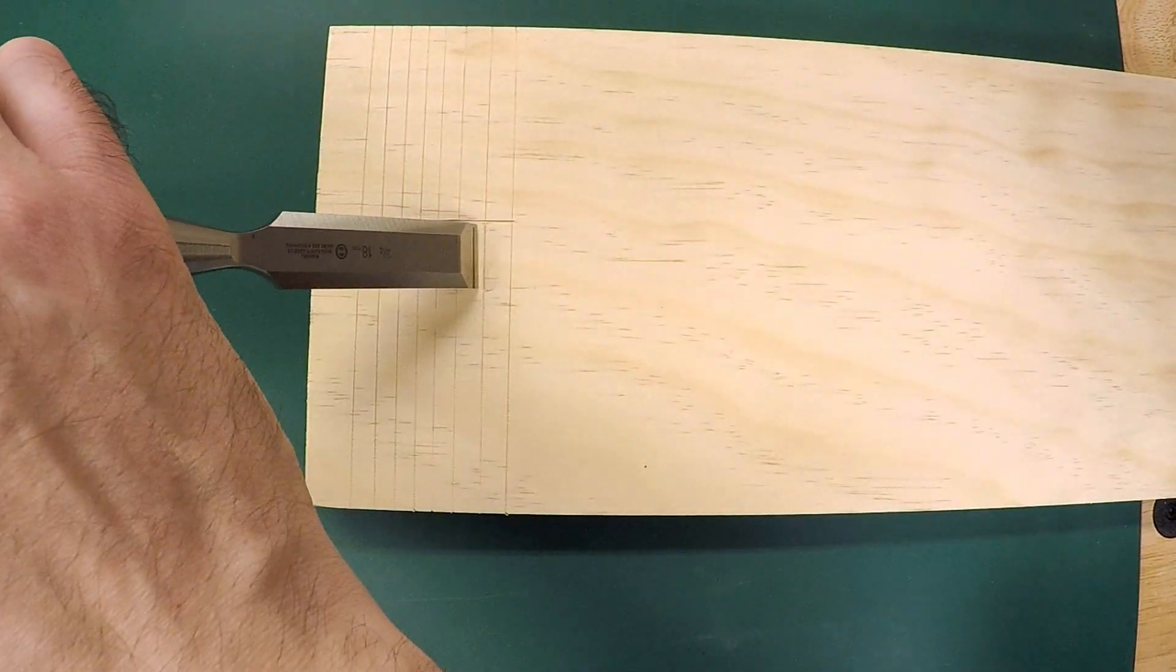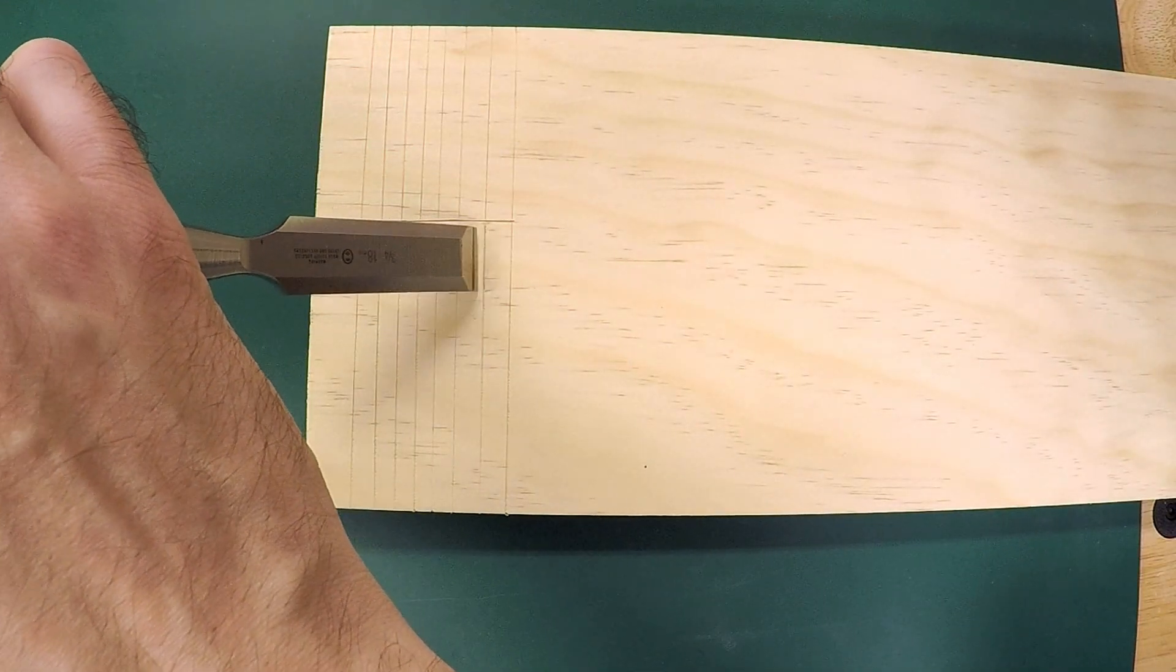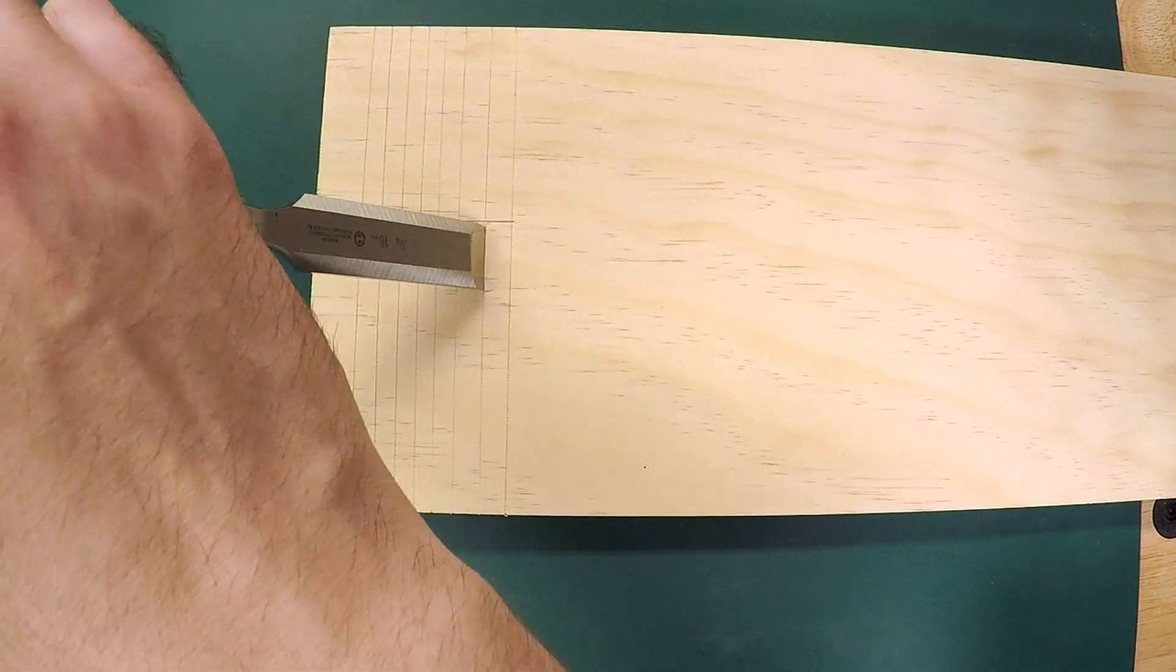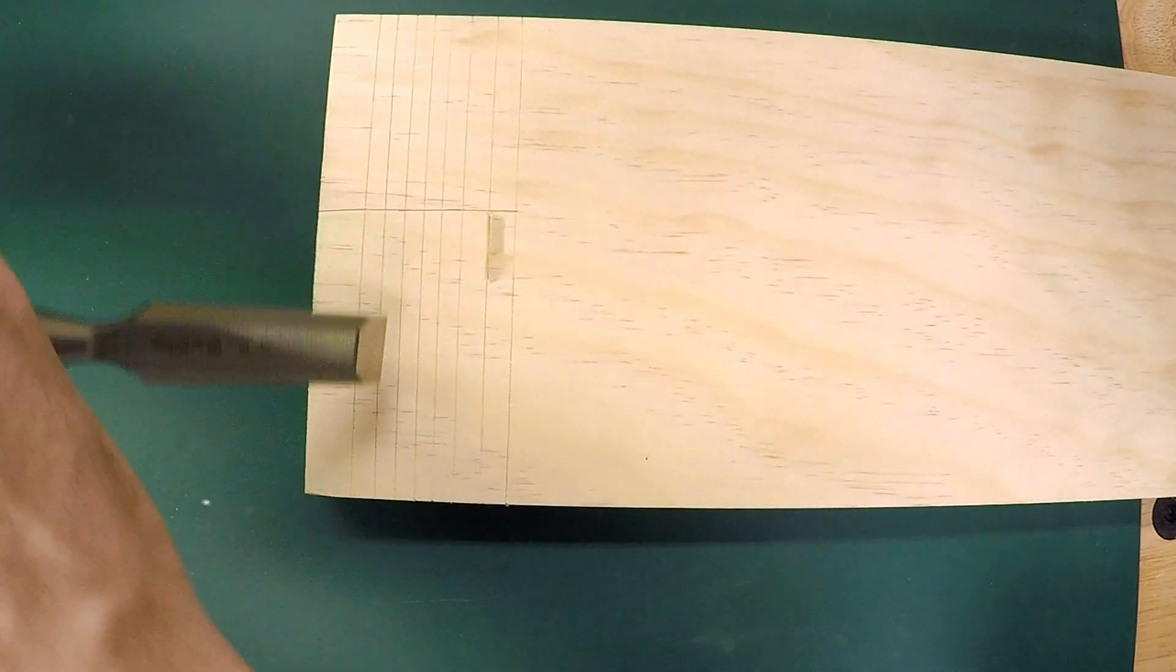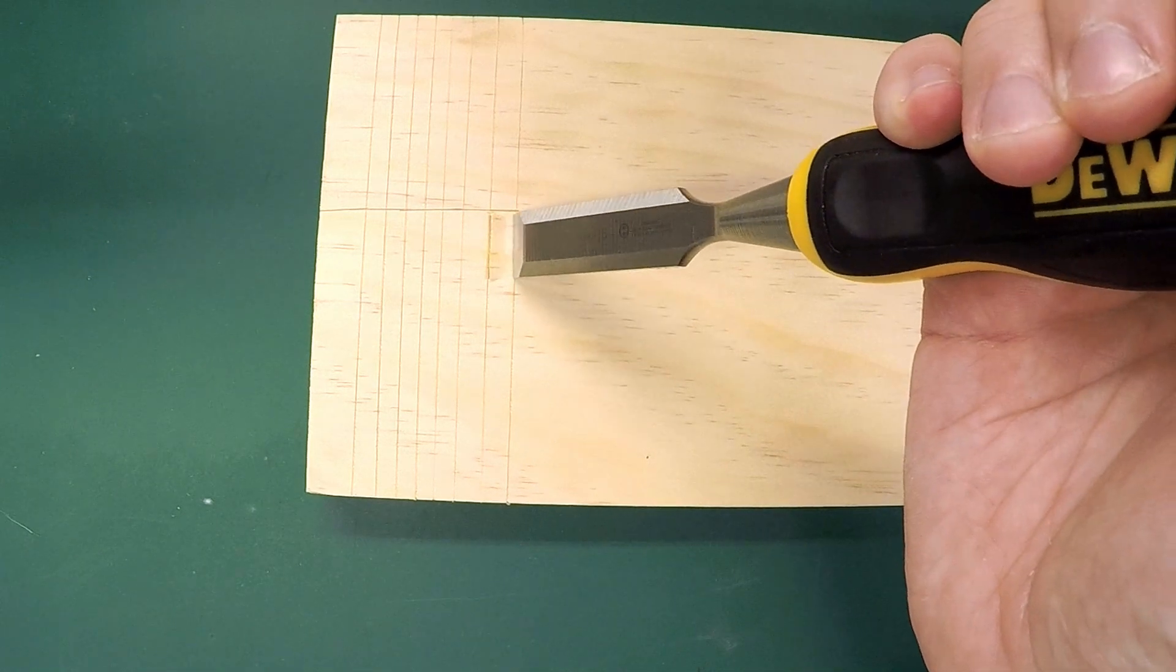This is a pine board so it's relatively soft. If you have something harder this may be a little bit more difficult. And you can see I'm just going back and forth and I want to just get it started and get that top layer off. And then I can go for depth after that.